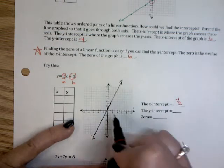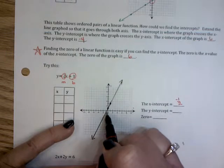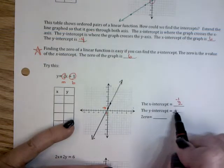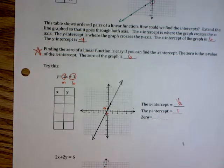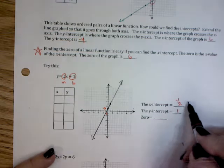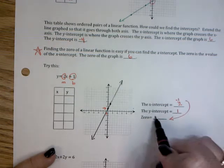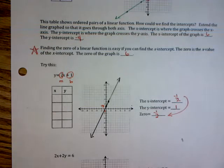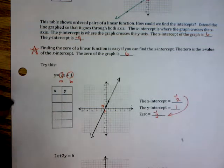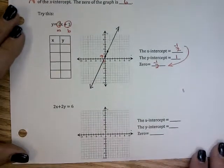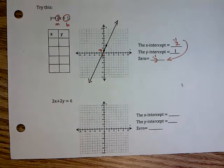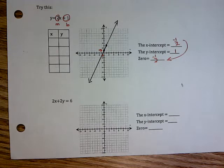Now when I identify my x-intercept, my x-intercept here is negative 1 half, it's where it crosses my x-axis right here. My y-intercept is right there, where it crossed my y-axis. So therefore, what is my zero? My zero is my x-intercept, so it's negative 1 half. They are the same answer.